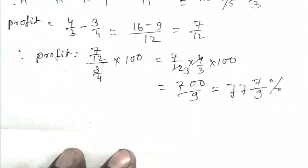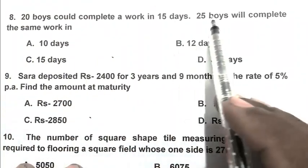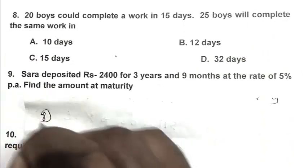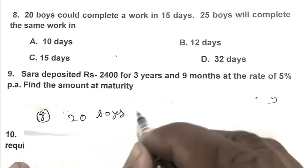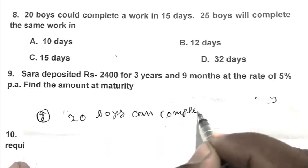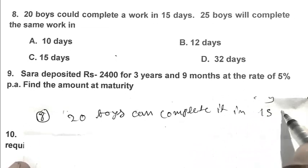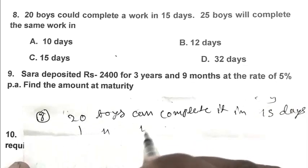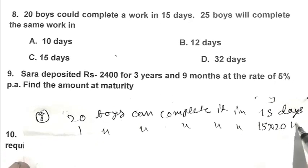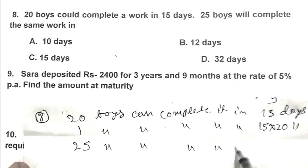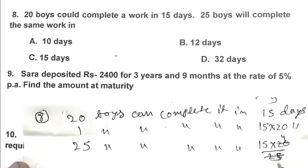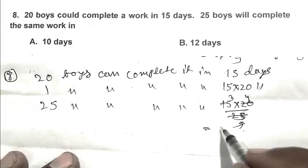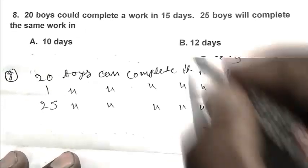Question number 8: 20 boys could complete a work in 15 days. 25 boys will complete the same work in. We can calculate it by inverse proportion method. 20 boys can complete it in 15 days. One boy can complete it in 15 multiply by 20 days. And 25 boys can complete it in 15 multiplied by 20 divided by 25, that is 12 days. B is the right answer.